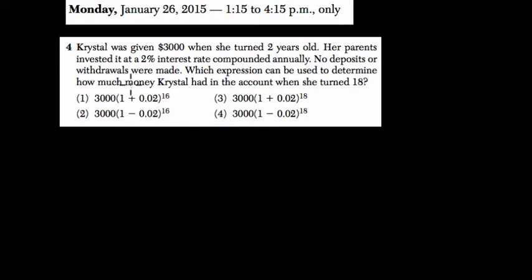Let's start by reading the problem together. It says Crystal was given $3,000 when she turned 2 years old. So I'm going to write this down in green. Deal with money here. She's given $3,000 when she was 2 years old. So this is our starting amount.